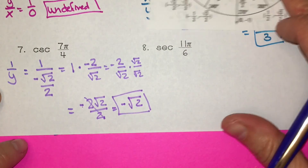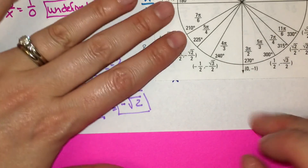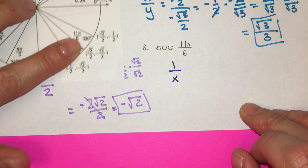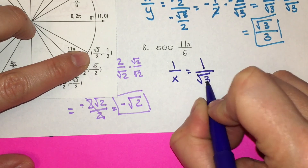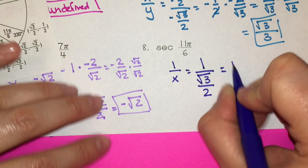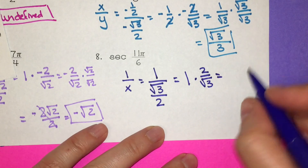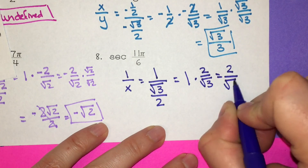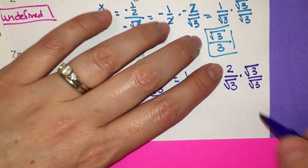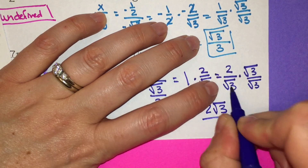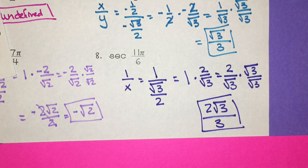The last one: secant is 1 over x, and at 11π over 6 we have 1 over the x value square root of 3 over 2. Keep it, change it, flip it — giving 2 over square root of 3. Multiply by square root of 3 over square root of 3, and we get 2 square root of 3 over 3. Hopefully you were able to get all of those answers.